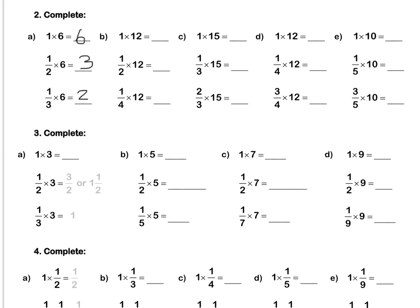Let's look at C. 1 times 15 is 15. A third times 15 is 5 because 15 divided by 3 is 5. Then, 2 thirds of 15, or 2 thirds times 15: 15 divided by 3 is 5, times 2 is 10. Press pause to complete Question 2 by yourself.